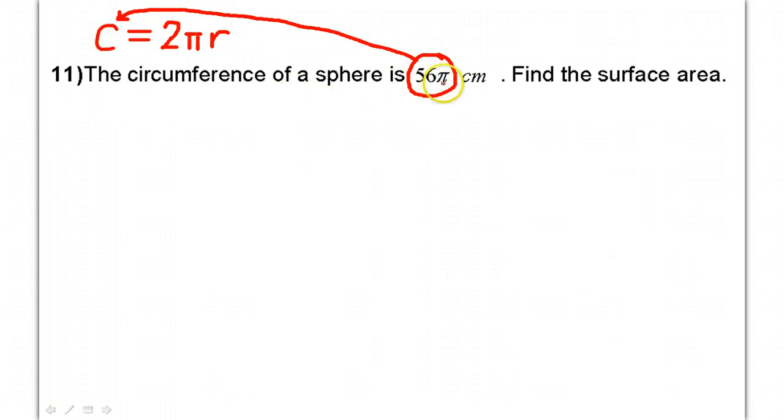Make sure you write the π. Some kids just put 56 by accident and they forget the π. So, if you're getting the wrong answer, you might have forgotten the π. Be careful. So, this will be 56π = 2πr.